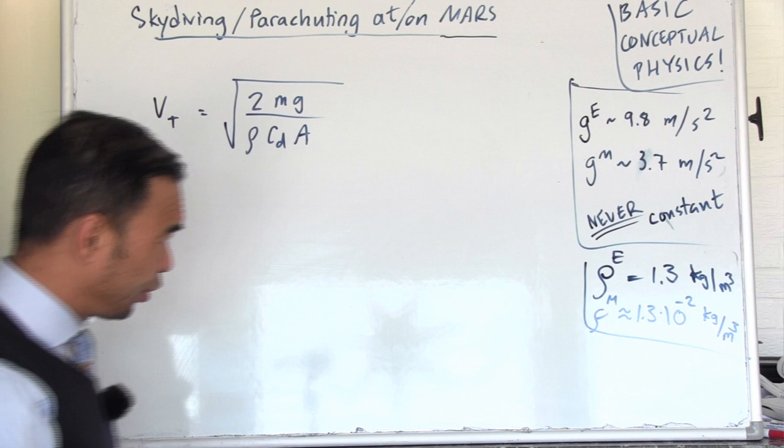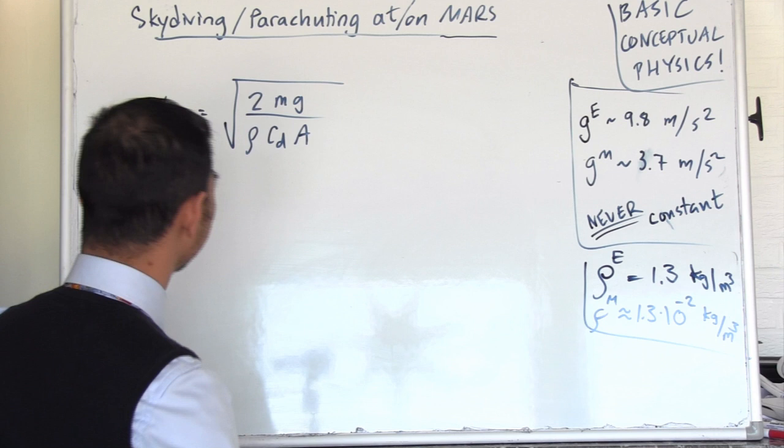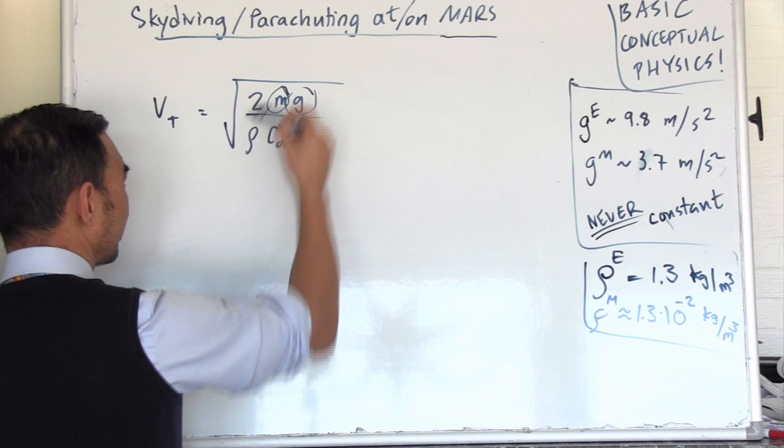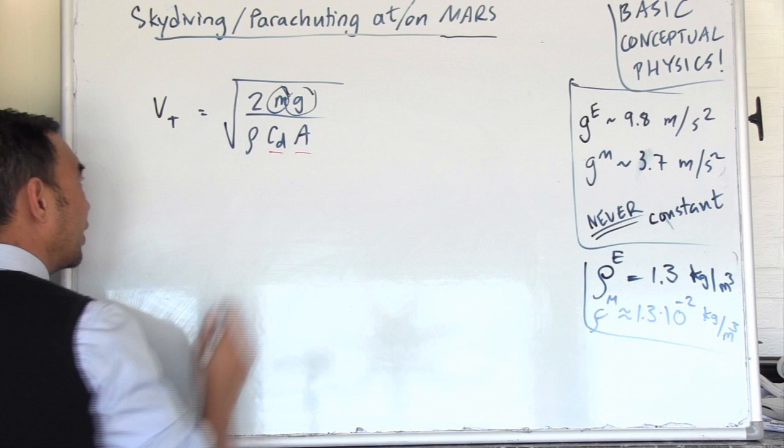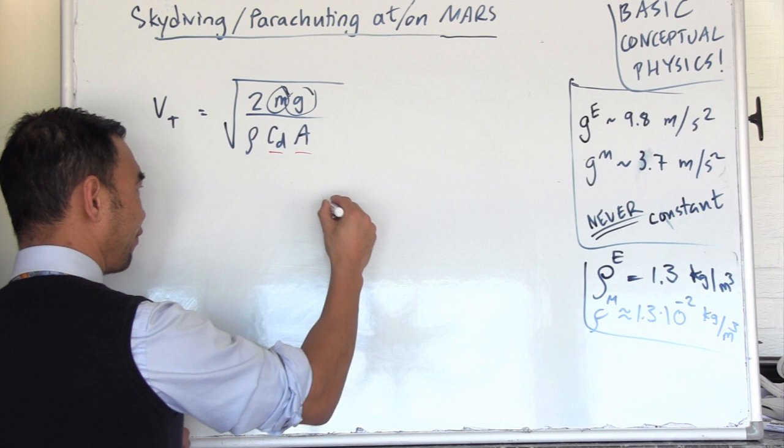We can approximate. This is the density for Earth: 1.2, let's say 1.3 kilograms per cubic meter. On Mars it would be something simple: you multiply by 10 to the minus 2 kilograms per cubic meter. We're going to use these numbers.